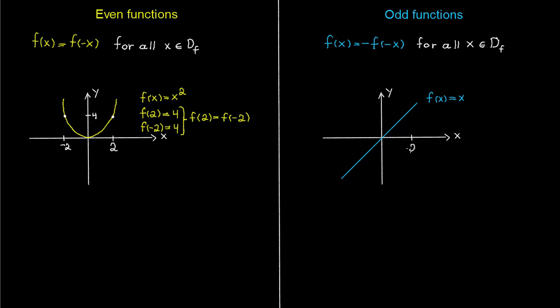We can now use the same method to see if the right function is odd. So for a value x equals 2, we get that the function is going to be 2. And for x equals -2, we get that the function equals -2. And the same pattern would have appeared if I had chosen any other x values. So that means that this function is an odd function since it fulfills the definition.